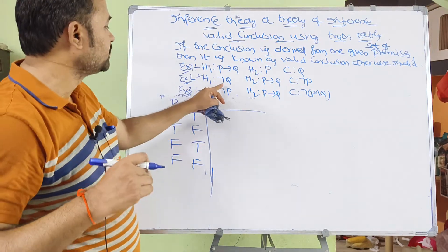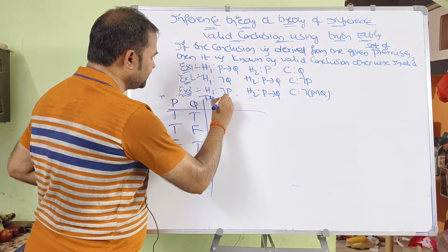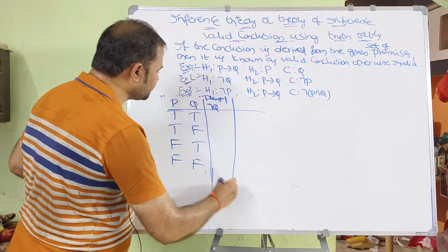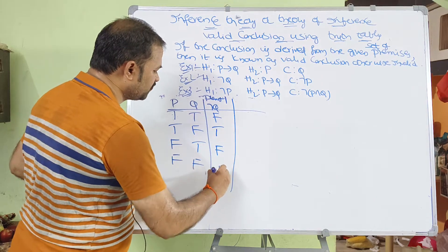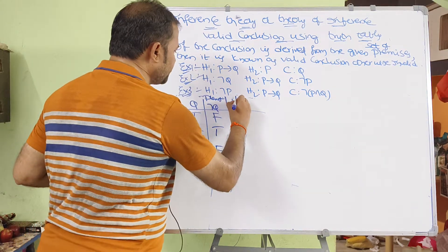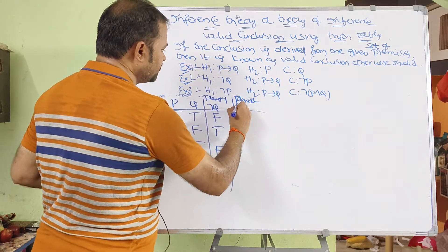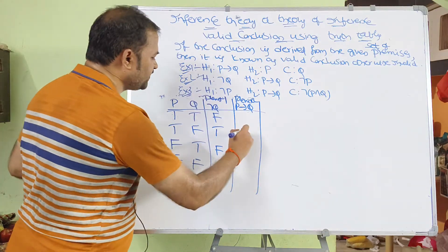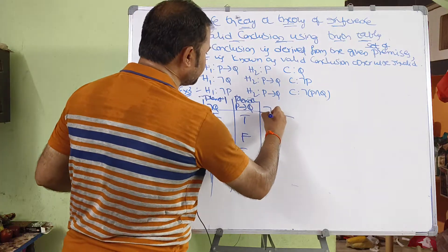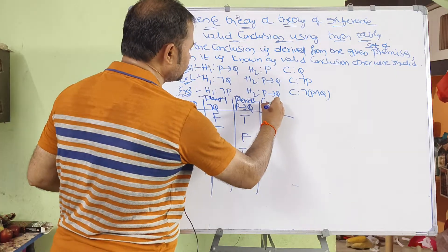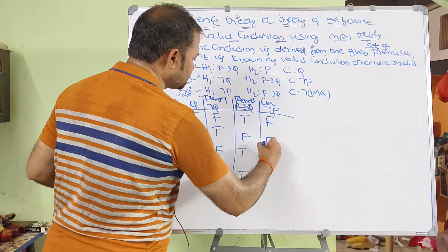Premise 1 is negation Q. So negation Q gives: false, true, false, true for the four rows respectively. Premise 2 is P implies Q, which returns false for true-false and true otherwise. The conclusion is negation P, which gives: false, false, true, true for the four rows.